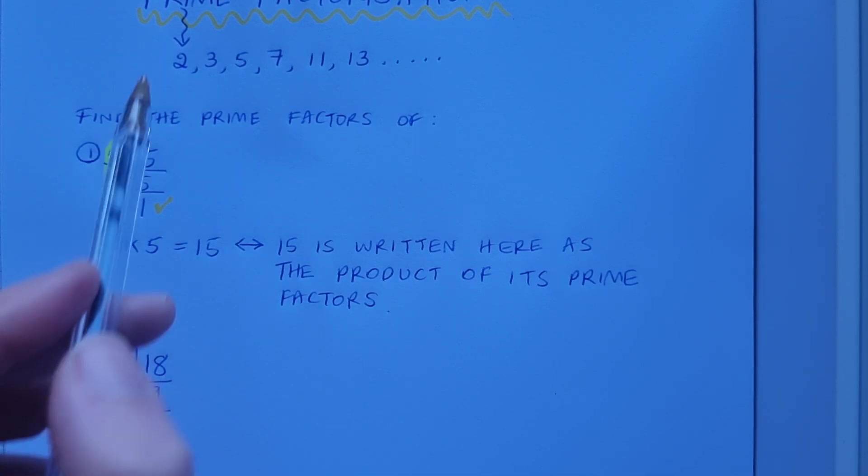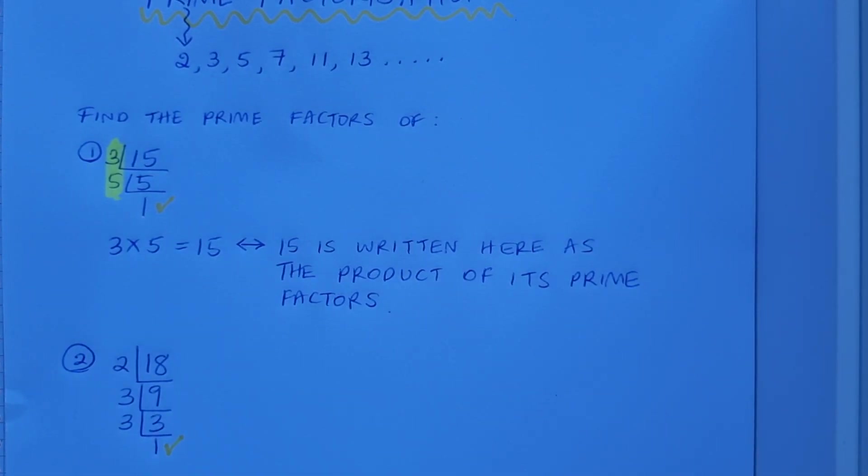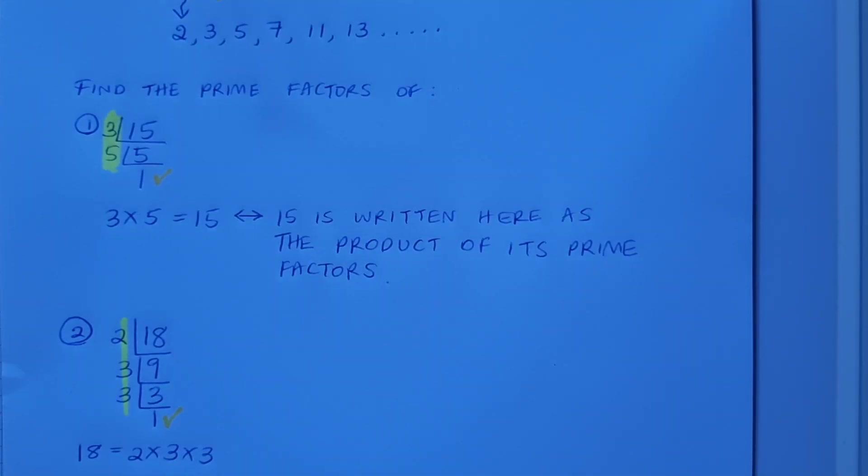What can I divide into 3? Well, it's just going to be 3 obviously, isn't it? 3 into 3 goes once. I get to 1, I'm done. The prime factors of 18 are listed down the side, and I can write 18 as the product of its prime factors: 18 is 2 by 3 by 3.